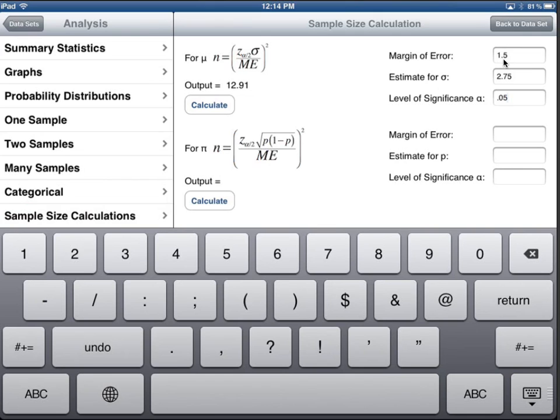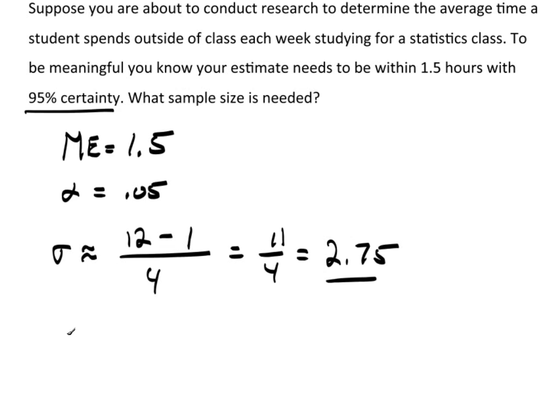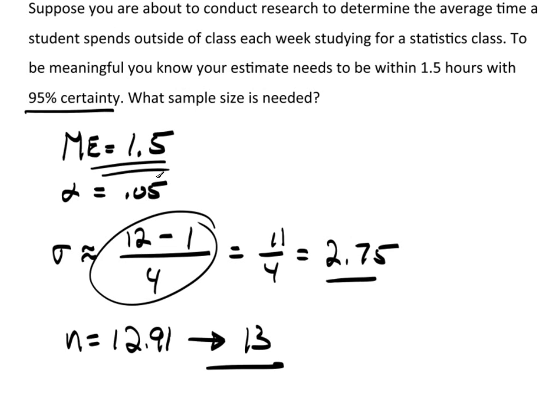So this is saying I need 12.91, which in reality means at least 13. So if this is a reasonable estimate to begin with, then I only need a sample size of 13 to have a margin of error no bigger than 1.5. However, once again, if this estimate is way off, then my margin of error will also be way off.